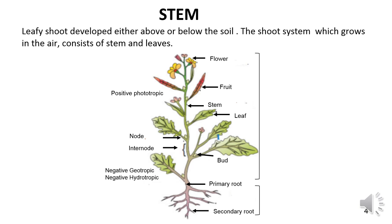The plant body of a typical flowering plant can be divided into the underground root system and the aerial shoot system. The shoot system is heterogeneous. The shoot system — meaning the stem — is an aerial and erect part of the plant body. It is usually above the soil and develops from the plumule of the embryo. It consists of stem, branches, leaves, flowers, fruits and seeds.